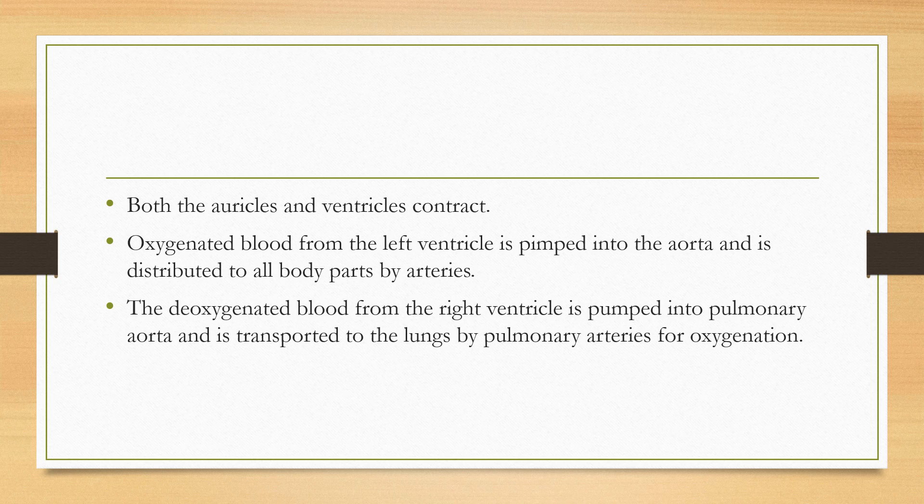Next, both the auricle and ventricle contract. The oxygenated blood from the left ventricle is pumped into the aorta and is distributed to all body parts by arteries. The deoxygenated blood from the right ventricle is pumped into the pulmonary aorta and is transported to the lungs by pulmonary arteries for oxygenation.